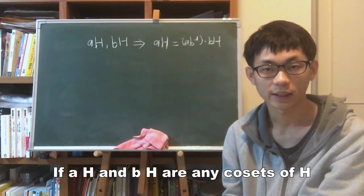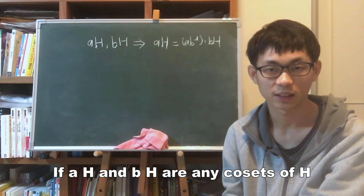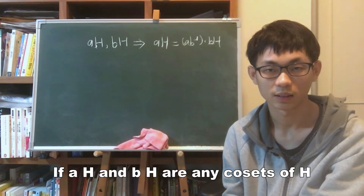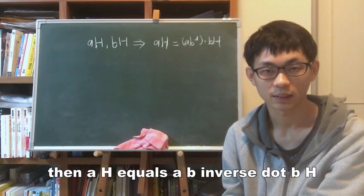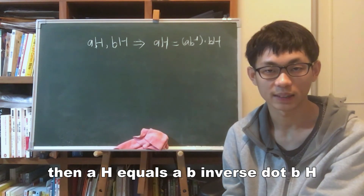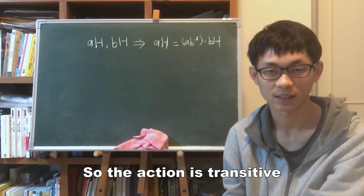If aH and bH are any cosets of H, then aH = ab⁻¹ · bH. So the action is transitive.